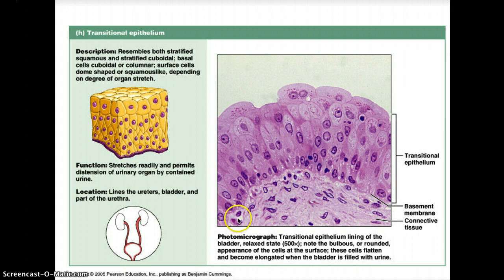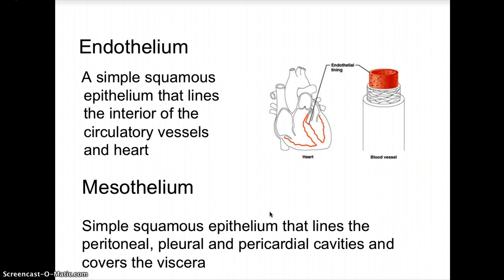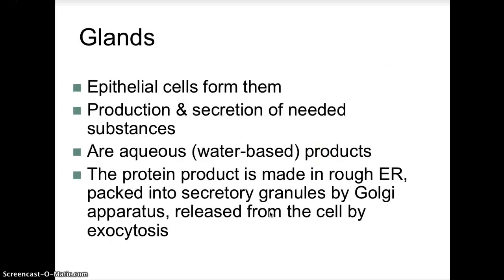Regarding membranes and glands — the endothelium, with 'endo' meaning inside, is a simple squamous epithelium that lines the interior of the circulatory vessels and heart. Mesothelium — 'meso' meaning in between — consists of simple squamous epithelium tissue that lines the peritoneal, pleural, and pericardial cavities and covers the viscera, meaning the organs.